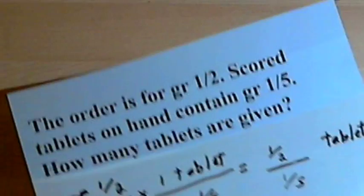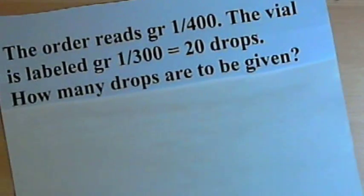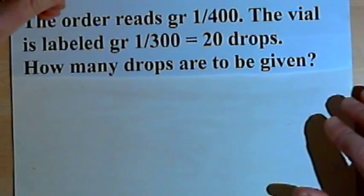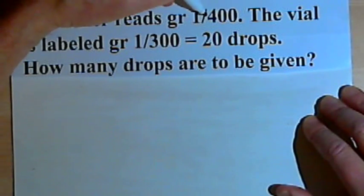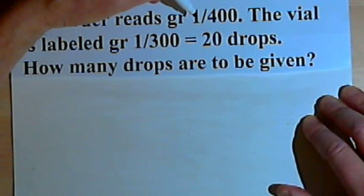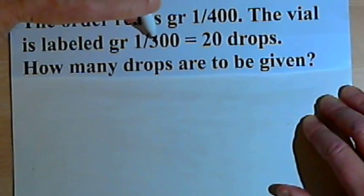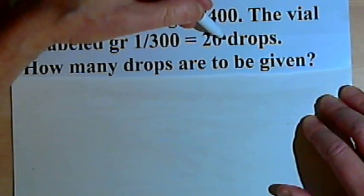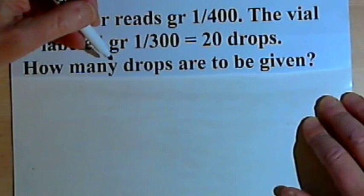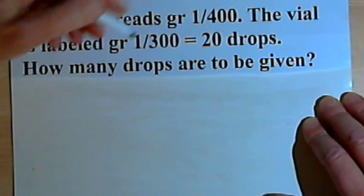that you take the division problem and turn it into a multiplication problem. Okay, let's do one more. This one says the order reads 1-400th of a grain, and then we've got a vial labeled 1-300th of a grain is the same as 20 drops. We want to know how many drops are to be given.